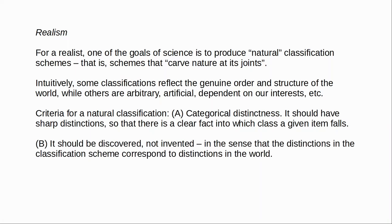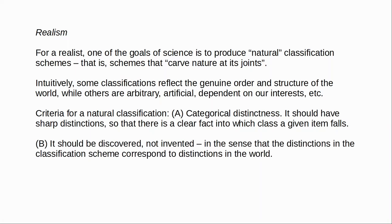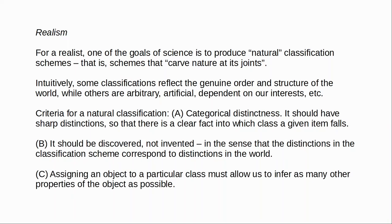Dupré's second criterion is that the natural classification must in some sense be discovered, not merely invented. We have to decide to construct a classification scheme in the first place, but the distinctions in the scheme must correspond in some sense to distinctions in the world — the kinds in our classification scheme should correspond to the natural kinds. The final desideratum is that assigning an object to a particular kind must allow us to reliably infer as many other properties of the object as possible. The ideal would be that the classification tells us everything about the object — when we know that something is mercury, this allows us to infer a whole bunch of other properties about it.